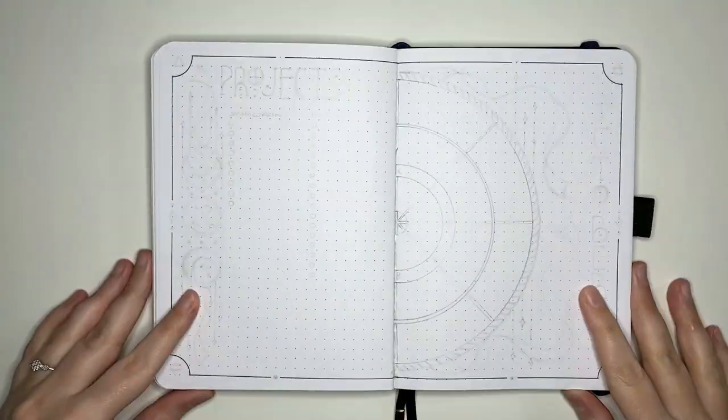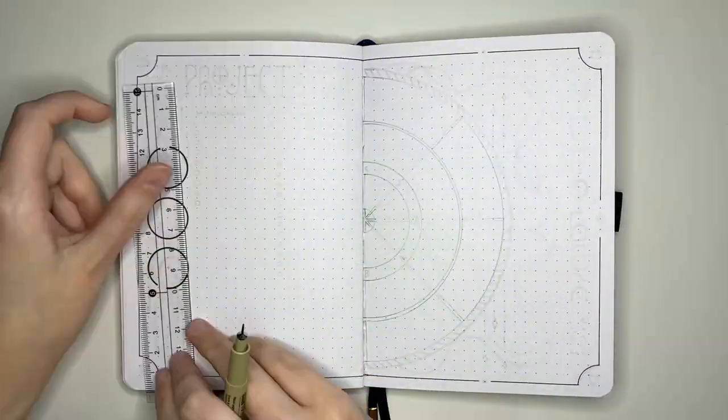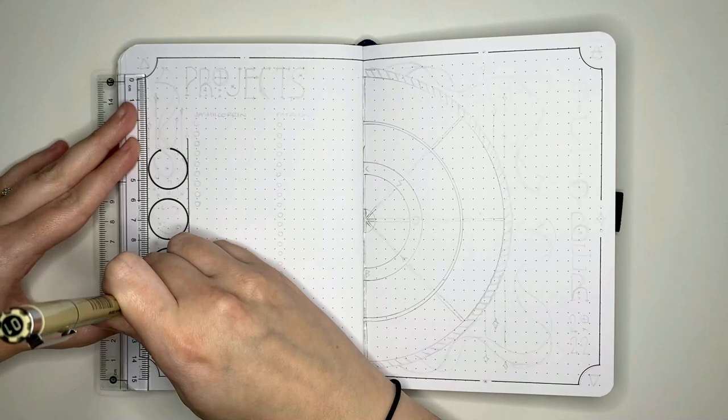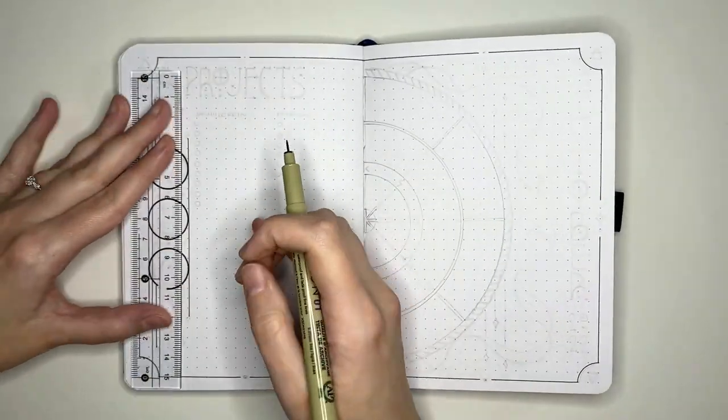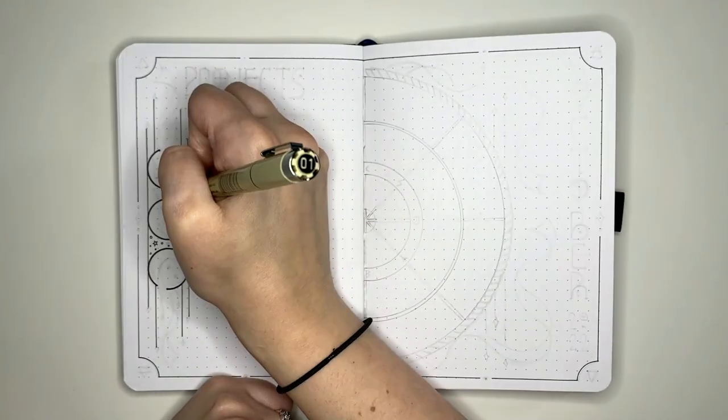Hello and welcome to my October bullet journal setup. For the month ahead we are going with a witches slash witchcraft theme and I feel like it kind of ended up being a little bit more celestial than I initially intended but we have moon witches right? Moon witches are a thing.